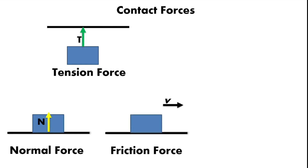The third contact force is friction. If our object is sliding to the right, the surface resists this sliding — that is friction. Friction always opposes sliding: if the object slides to the right, friction acts to the left. Friction is always parallel to the surface, unlike the normal force which is perpendicular to the surface. The symbol for friction is italicized lowercase f.